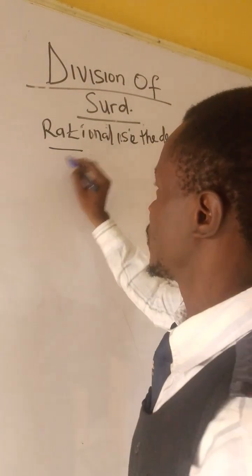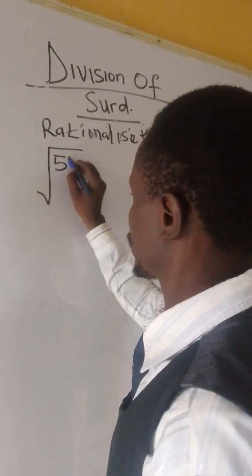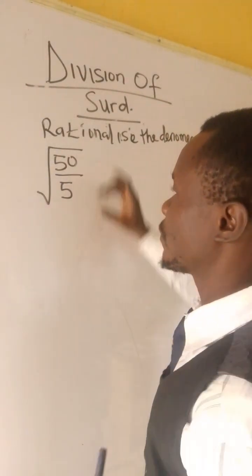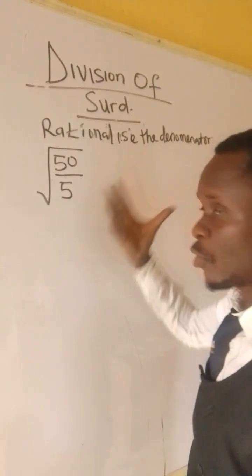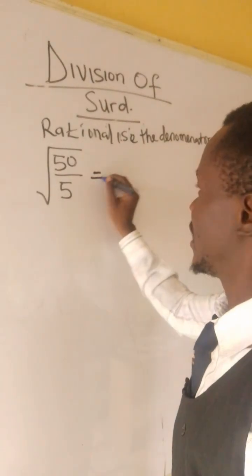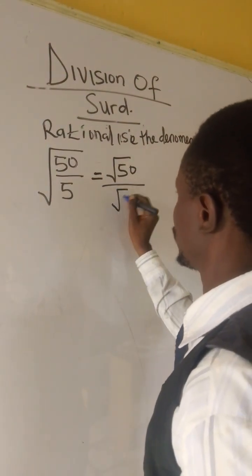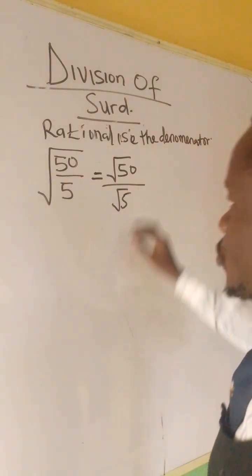So, for example, you have a question like this. You have root 50 over root 5. You could have a question this way and also this means that you have root 50 over root 5. The question can also come this way.